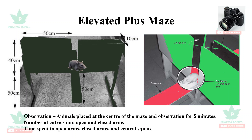In the elevated plus maze, the animals are placed at the center of the maze and observed for five minutes. The number of entries into open and closed arms are noted, and the time spent in the open arms, closed arms, and center square are noted for the vehicle control group and the anxiolytic drug group. Nowadays there is automatic recording and calculation done by the software.